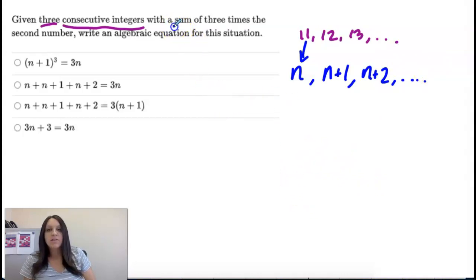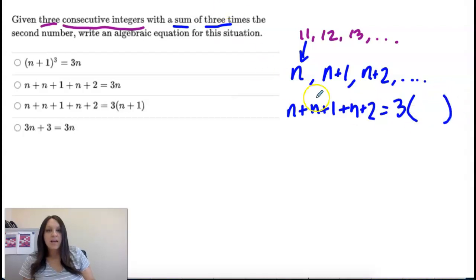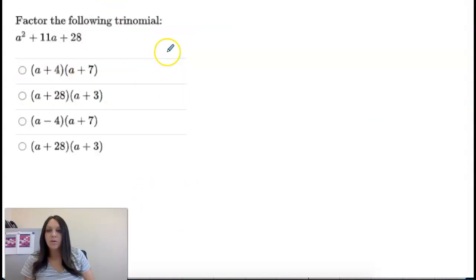So I'm looking for the sum of these. So I'm going to have n plus n plus 1 plus n plus 2. And that sum is three times the second number. So three times, if I want to times something together, I'm going to put whatever I'm timesing in parentheses. And the second number is n plus 1. So it would be this one. So it's really close to that, but that's timesing by the first number. Okay, so you'll see a couple of those and then you'll get into where you need to factor.